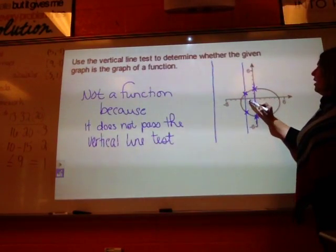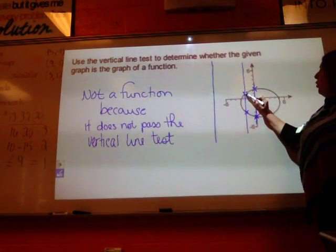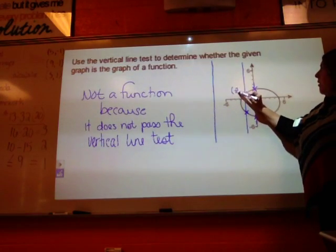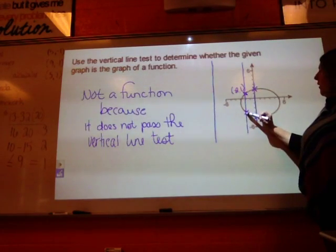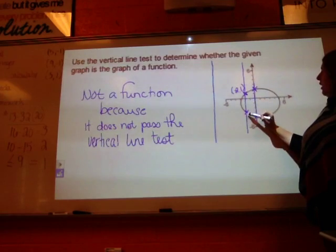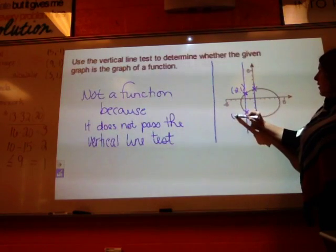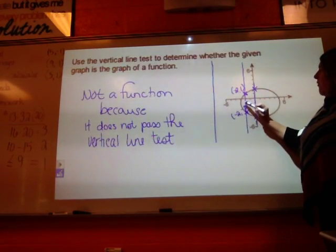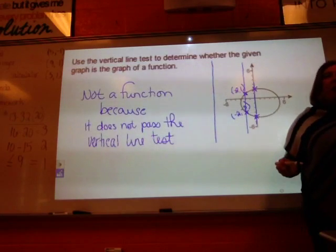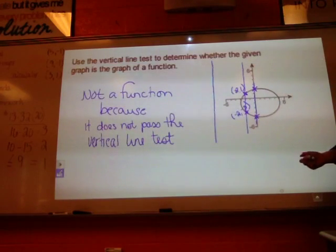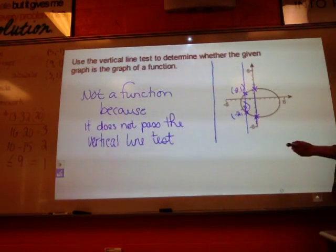So like this point right here is negative 2, 1. Well, this point right here is negative 2, negative 3. And if you'll remember, according to our function rule, the domain values cannot repeat.